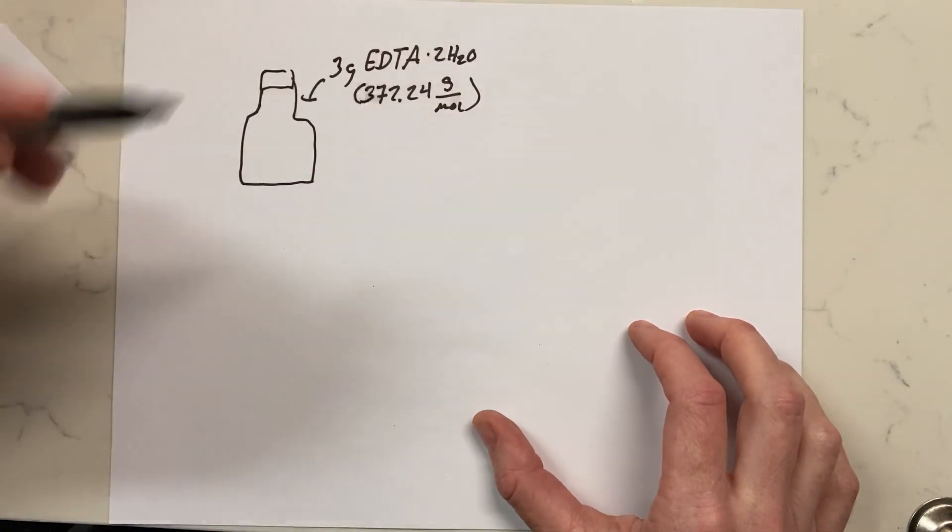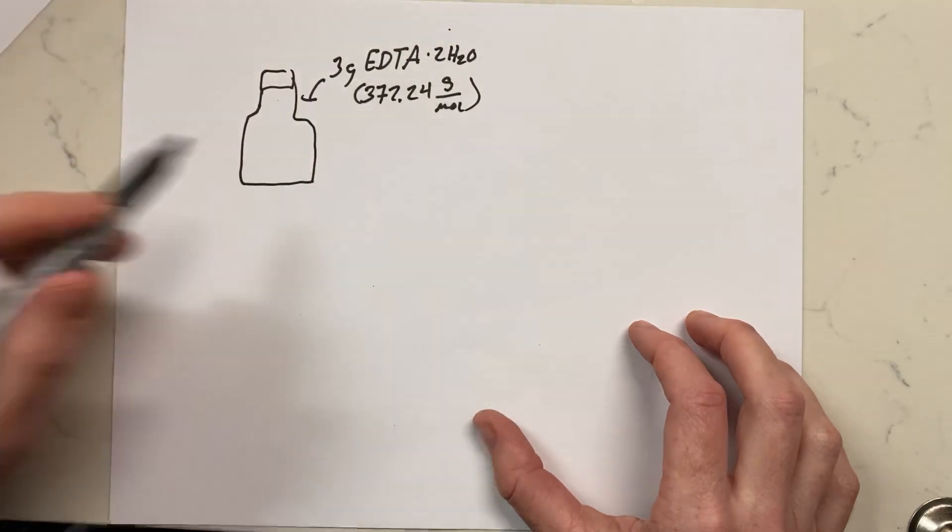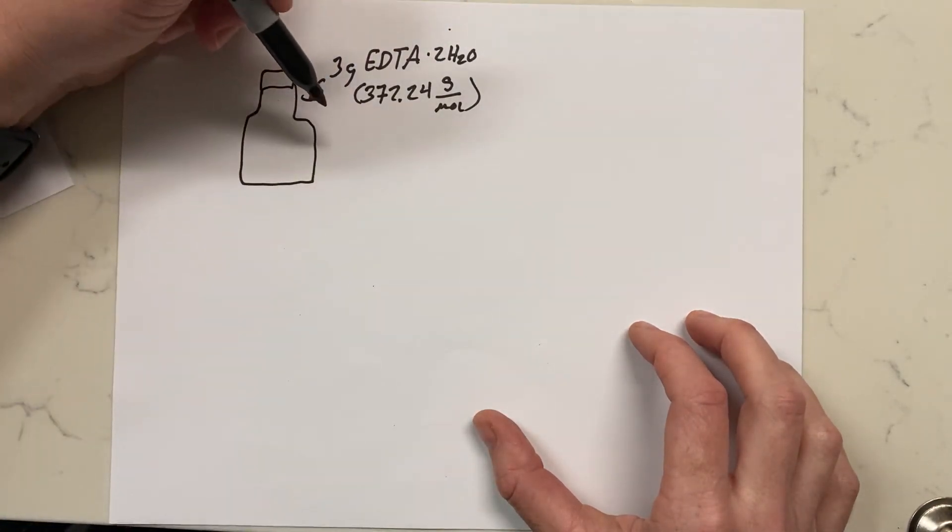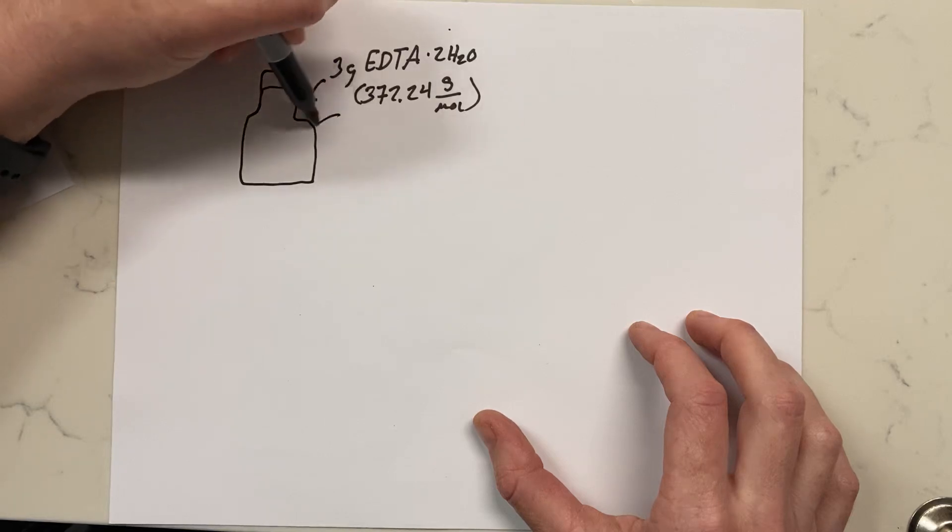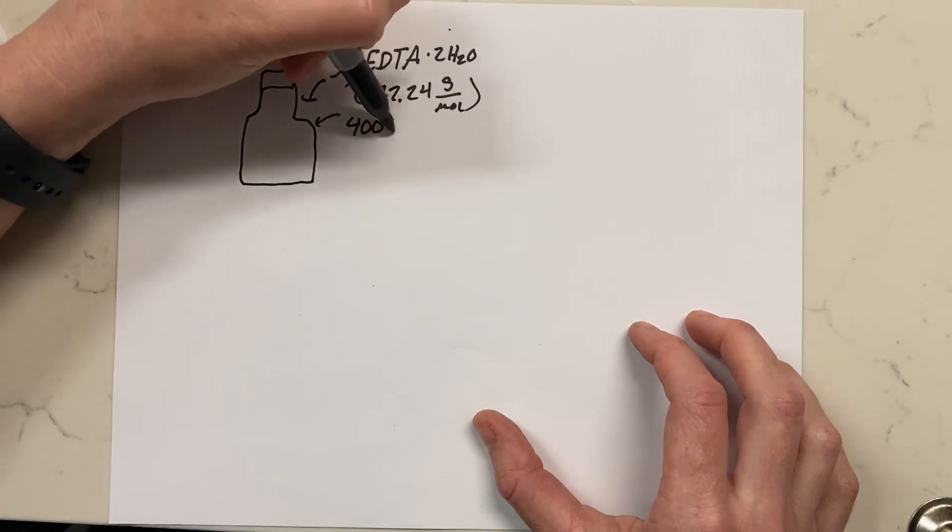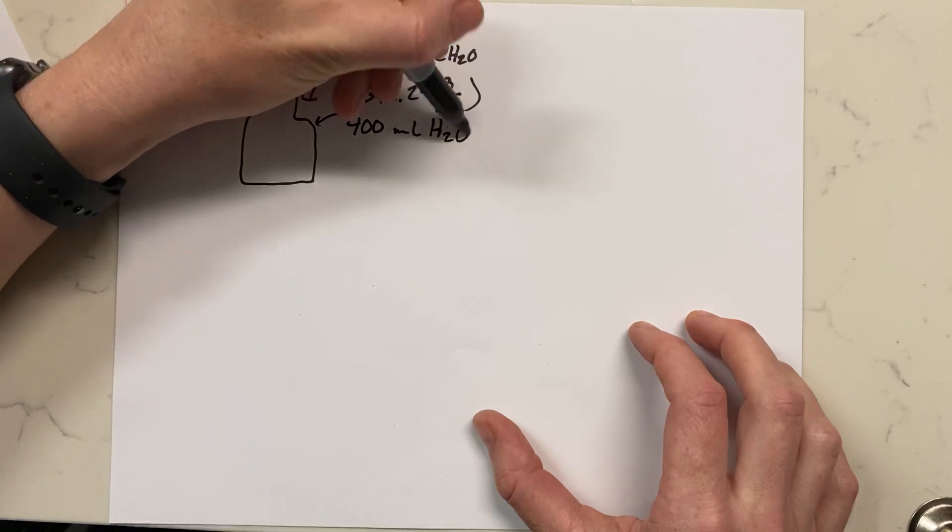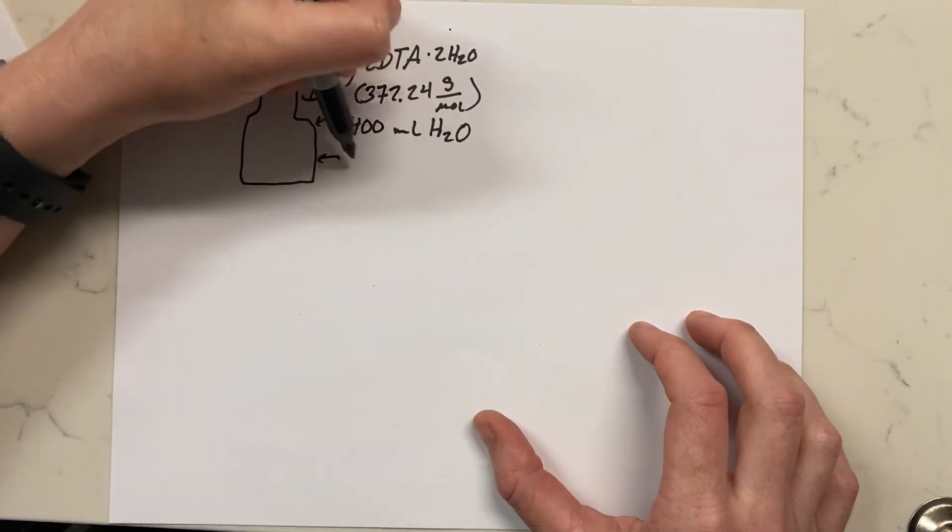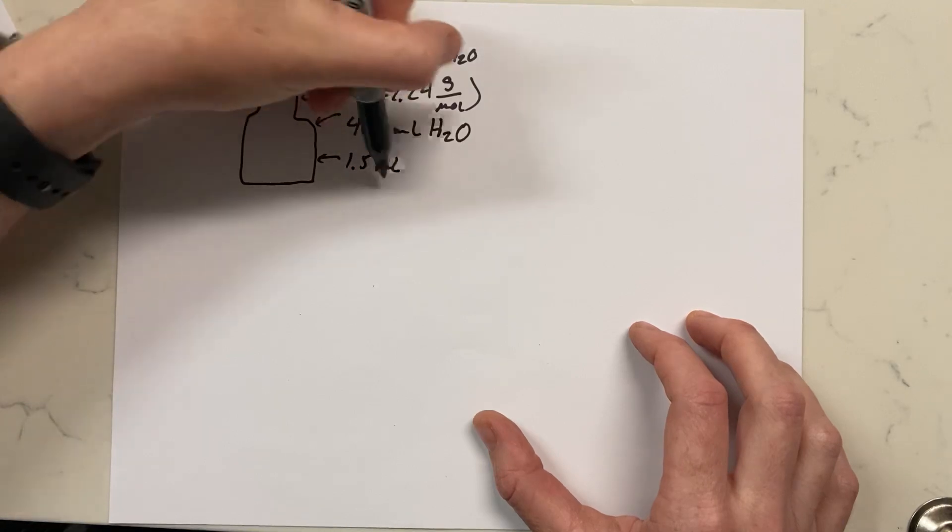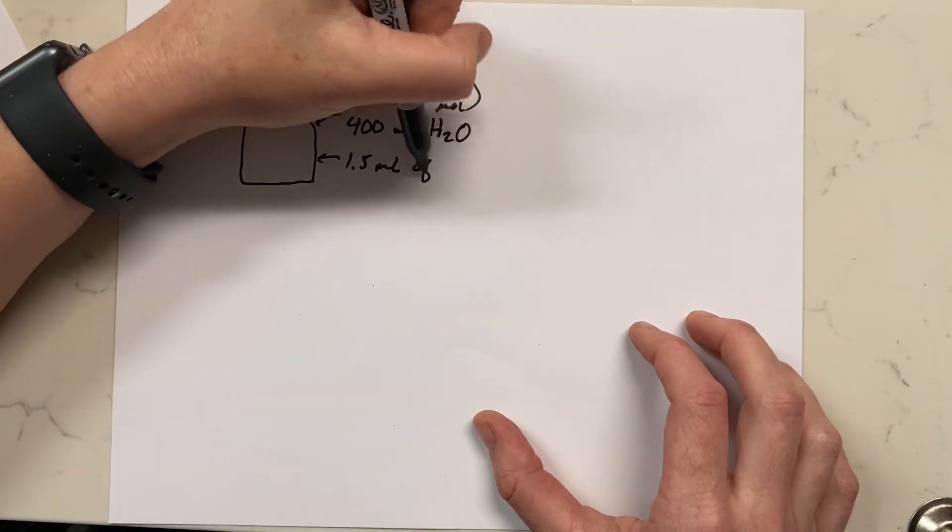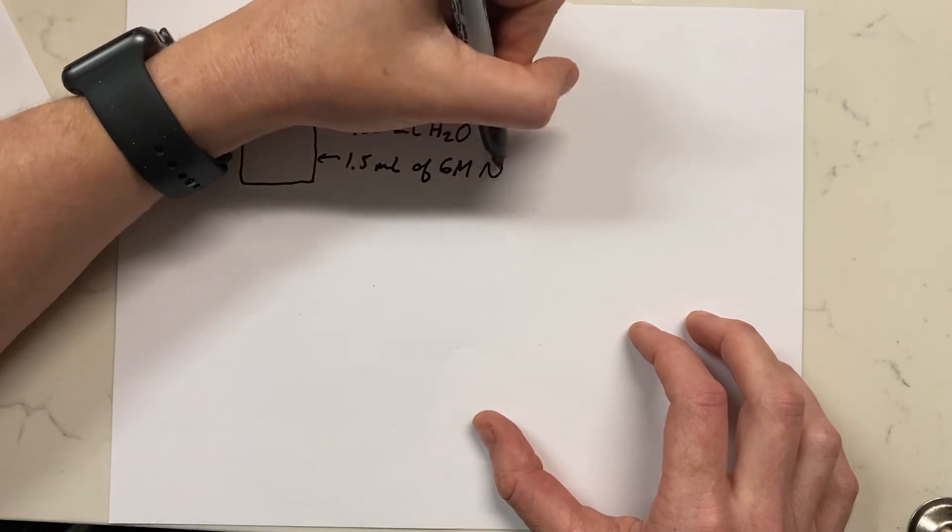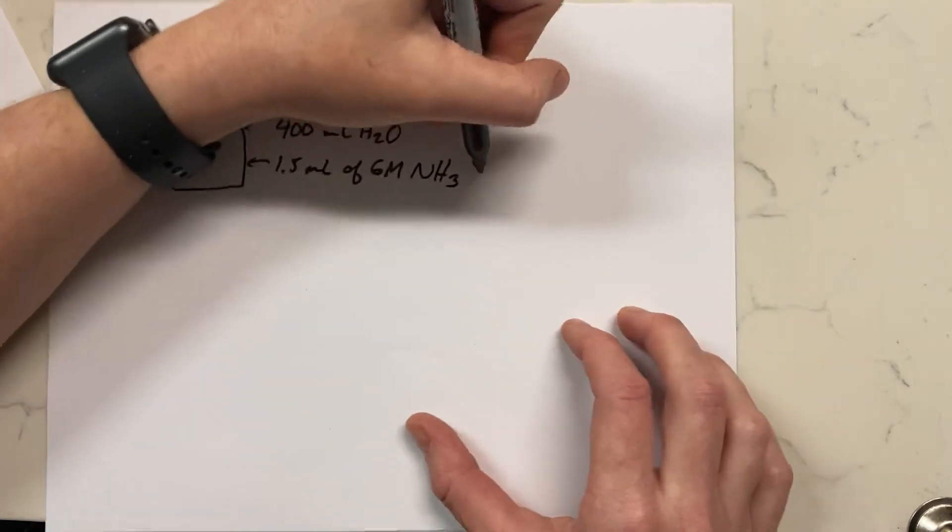Then we added about 400 milliliters of water. We weren't too careful about it. And then we added 1.5 milliliters of 6 molar ammonia, which is oftentimes written as ammonium hydroxide because it's dissolved in water.